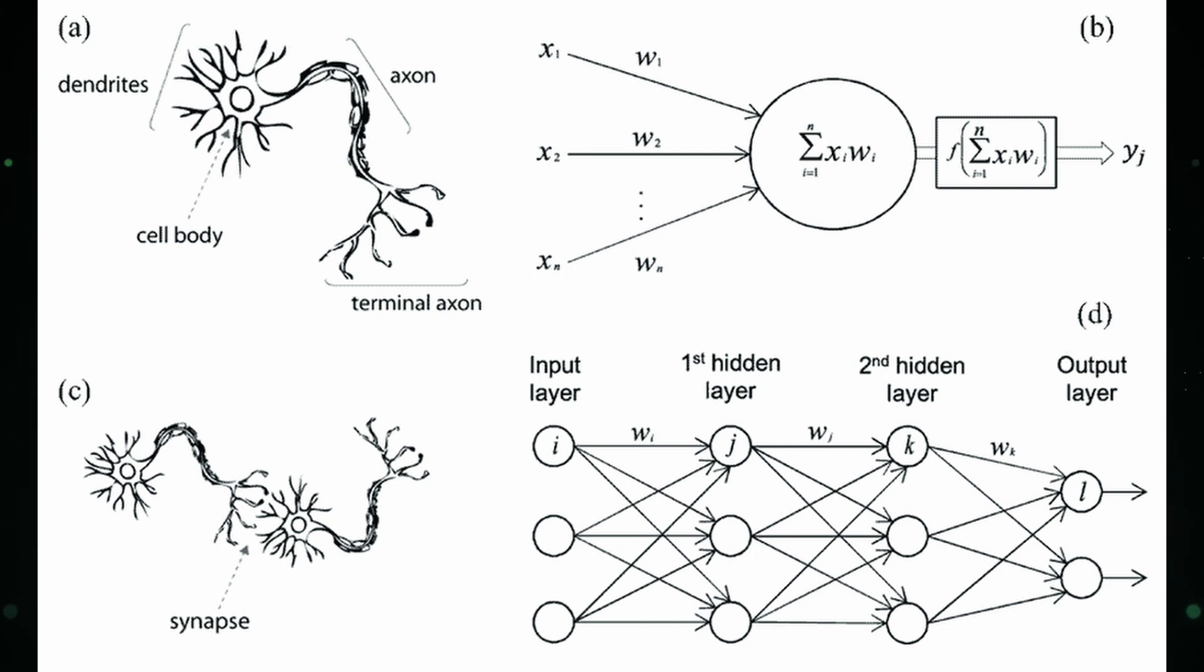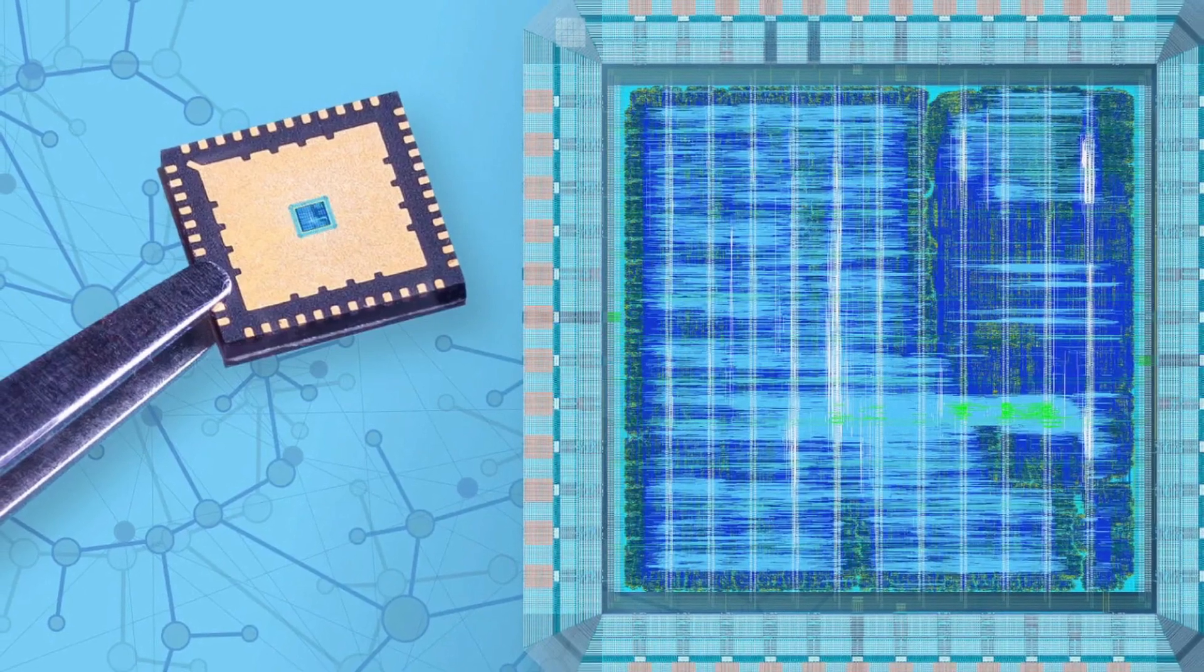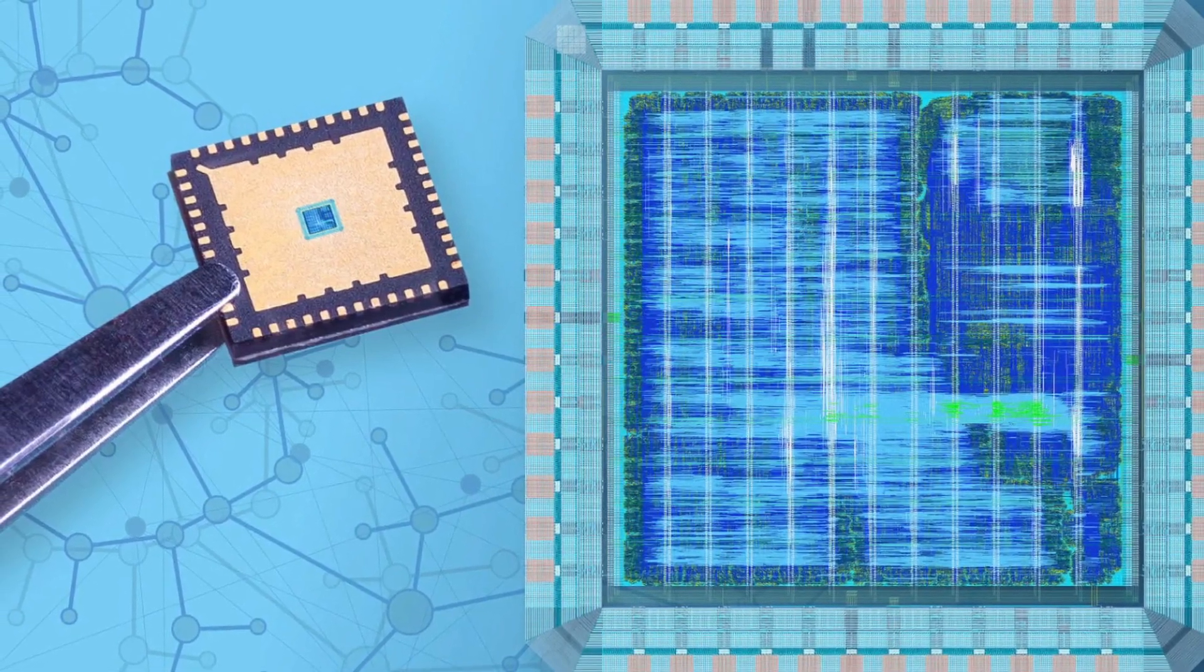It uses hardware modeled after the structures, processes, and capabilities of biological neurons and synapses. The most popular form of neuromorphic hardware is the spiking neural network, SNN.